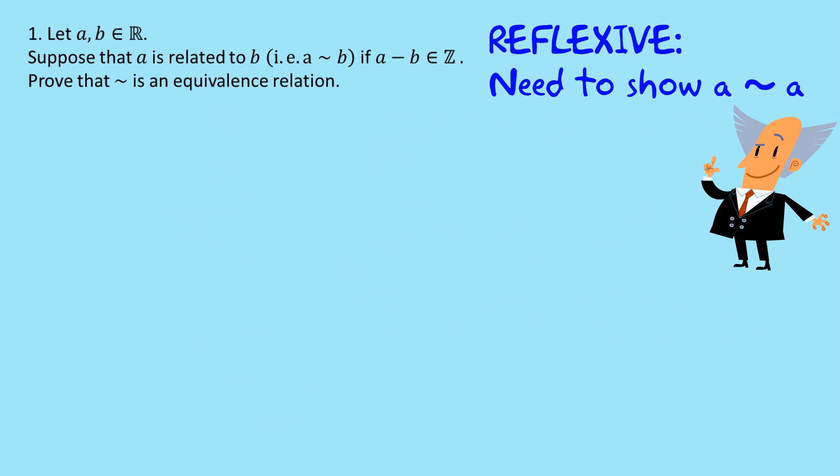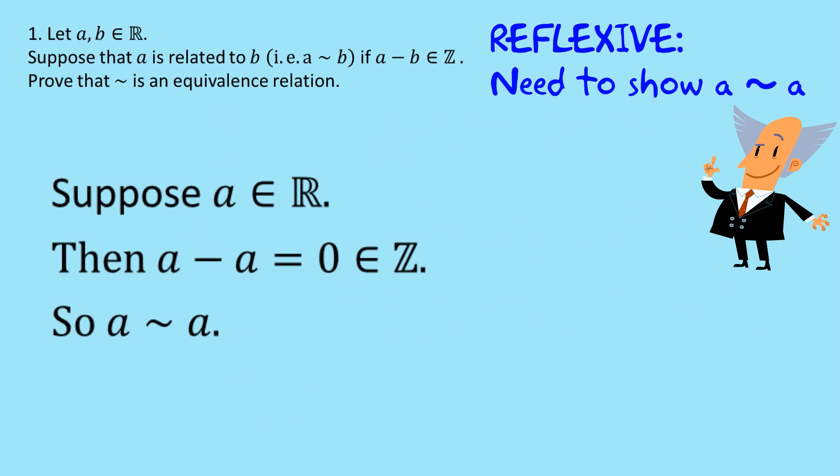So firstly, we need to show that it's reflexive, and we need to show that a is related to a, a is related to itself. So let's do that in this case. Suppose a is an element of r, then a minus a equals zero, which is an integer. So a is in fact related to a.